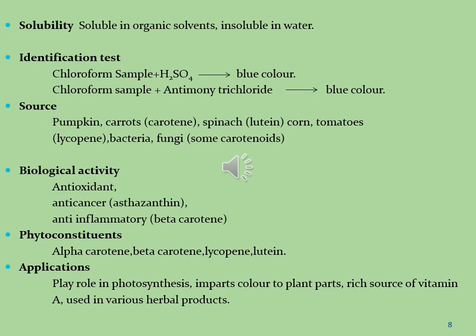Carotenoids are soluble in organic solvents and insoluble in water. Two identification tests are performed. In the first test, the sample is taken in chloroform and concentrated sulfuric acid is added along the side walls of the test tube, giving a blue color. In the second test, the sample in chloroform has antimony trichloride added, which also gives a blue color, indicating the presence of carotenoids.